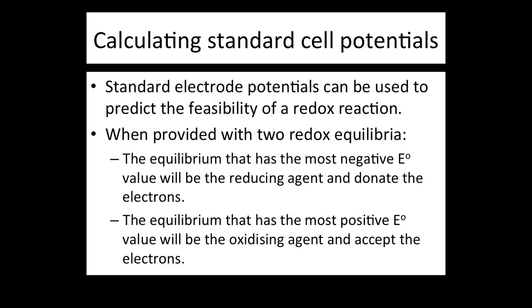From what we covered last lesson, the information on this slide should make a lot of sense. If it doesn't, you need to go back and go through lesson 1 again. Standard electrode potentials can be used to predict the feasibility of a redox reaction. The equilibrium with the most negative standard electrode potential will be the reducing agent and donate electrons, while the one with the most positive value will be the oxidising agent and accept electrons. By convention, standard electrode potentials are written as reductions.